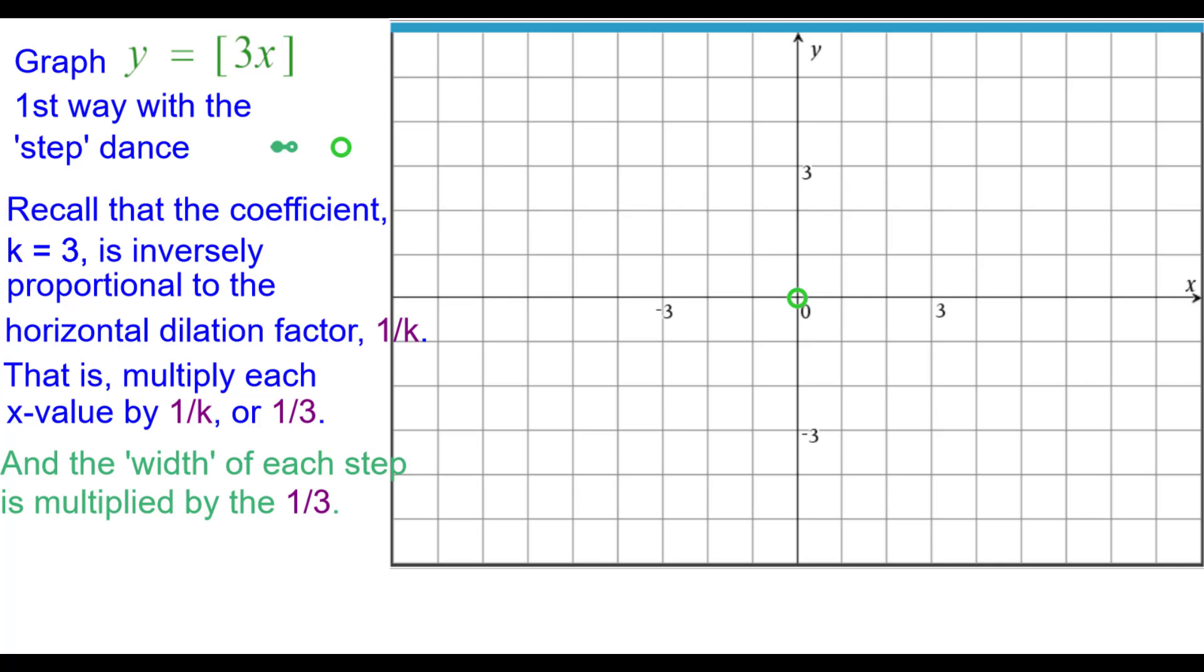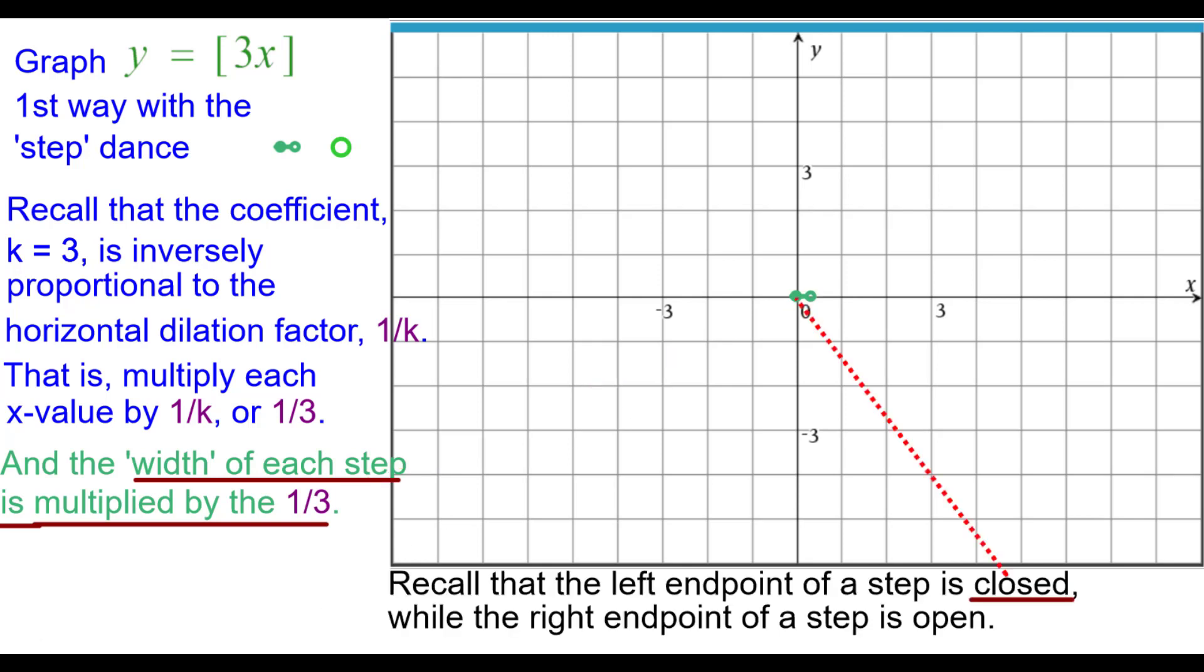So instead of being a whole unit wide, it's 1 third wide. And there's our first point there, it's 0, 0. Recall that the left point of a step is closed, while the right end point is open.